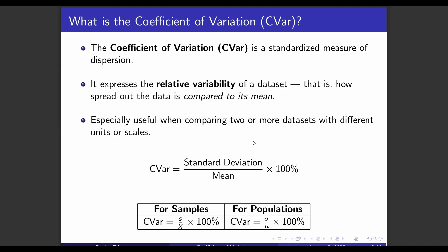The mathematical formula for calculating the coefficient of variation is: CV equals the standard deviation of the data set divided by the mean of the data set, times 100%. For samples, we have the standard deviation s divided by the mean x-bar, times 100%. For populations, we have sigma over mu times 100%, where sigma is the population standard deviation and mu is the population mean.